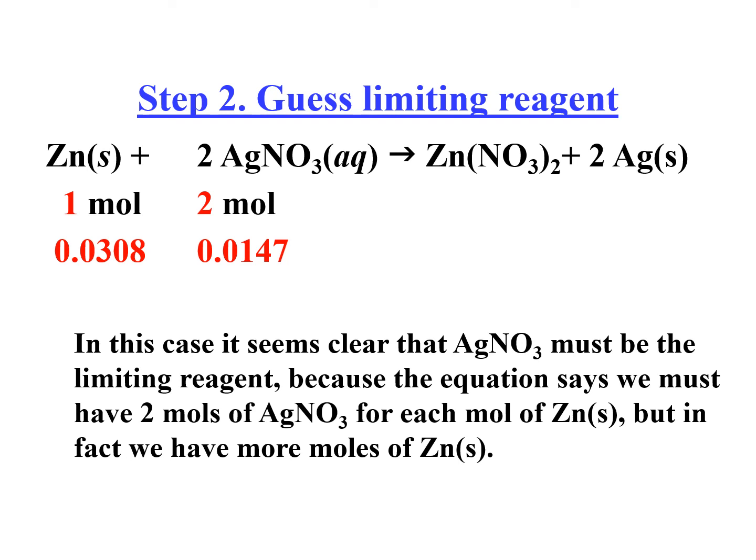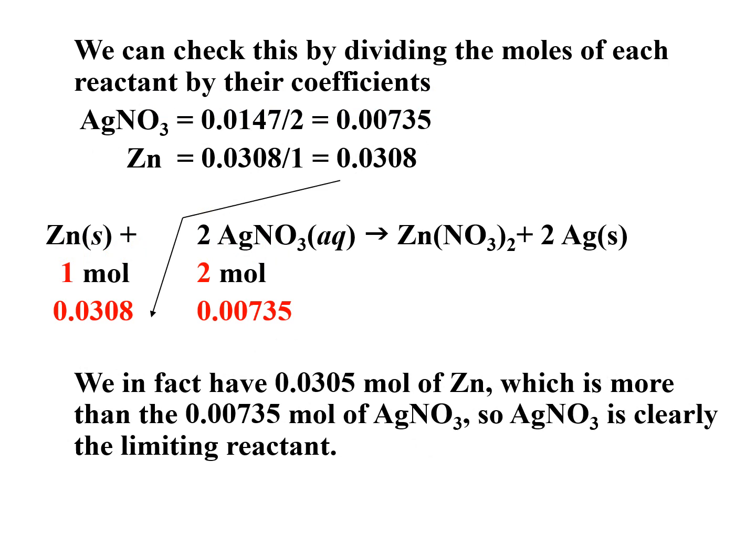Guess the limiting reagent. In this case, it seems clear that silver nitrate must be the limiting reagent because the equation says we must have 2 moles of silver nitrate for each mole of zinc. But, in fact, we have more moles of zinc. We can check this by dividing the moles of each reactant by their coefficients. Sa coefficient nila, 0.0147 divided by the coefficient. Mas mababa, mas mababa ang silver nitrate. 0.0305 mole of zinc, which is more than 0.00735 mole of silver nitrate. Silver nitrate is clearly the limiting reagent.